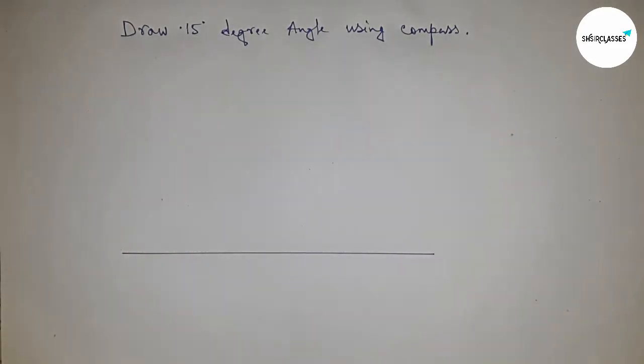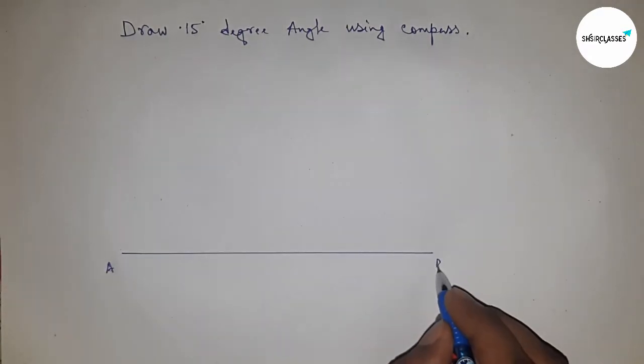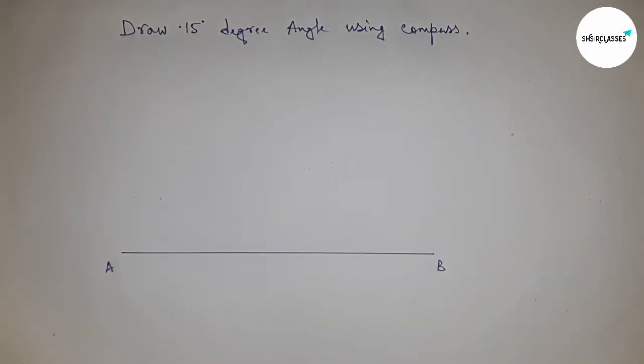First of all, drawing a line of any length here and this is AB line. Next drawing the angle on the point A.